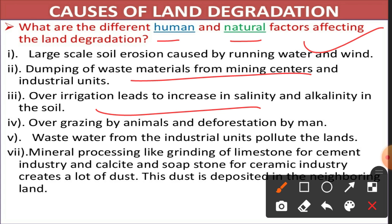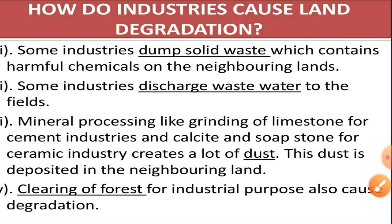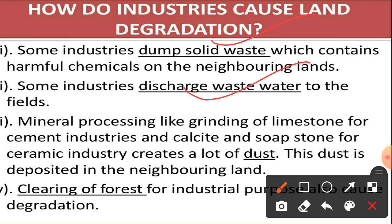Overgrazing by animals also promotes deforestation because animals destroy young saplings, which increases soil erosion. Wastewater from industrial units pollutes the land. Mineral processing like grinding of limestone for cement industry and calcite or soapstone for the ceramic industry creates a loss of dust and causes air pollution. Industries are responsible for land degradation by dumping solid waste, discharging water without treatment, and clearing forests.